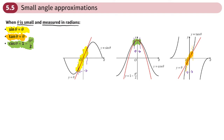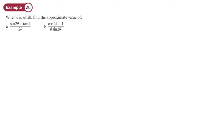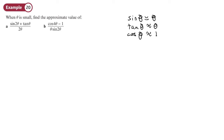These small angle approximations are given in the formula book, so you don't need to memorise them. Let's have a look at an example. I'll write them up: sine theta can be approximated to theta, tan theta can be approximated to theta — those are the easy ones to remember — and cos theta can be approximated to 1 minus theta squared over 2.